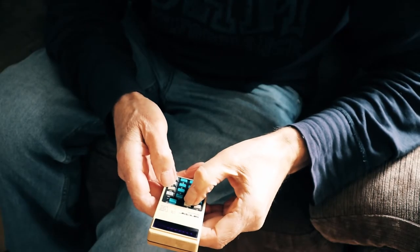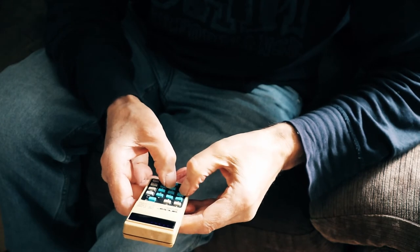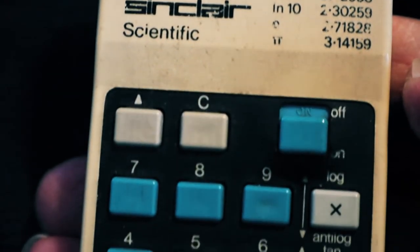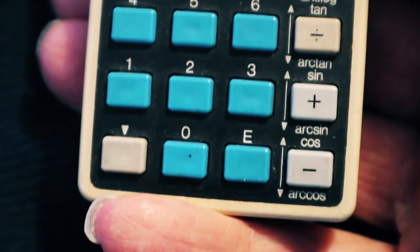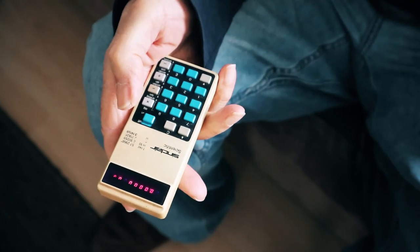It uses reverse Polish notation for putting in calculations. Compared to other calculators the Sinclair is a bit slow and sometimes it got the answer wrong but it was cheaper than the competition.